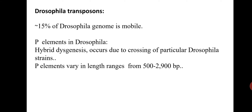P elements vary in length, ranging from 500 to 2900 base pairs. These P elements are transposable elements that were discovered in Drosophila as the causative agents of the genetic trait known as hybrid dysgenesis. The transposon responsible for the P trait is found only in wild type flies. They are also found in many other eukaryotes, but here we are studying in wild type Drosophila.